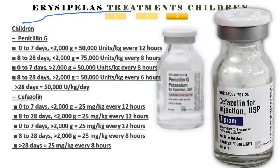Children. Penicillin G: 0 to 7 days, weight greater than 2,000 g: 50,000 units/kg every 8 hours. 8 to 28 days, greater than 2,000 g: 50,000 units/kg every 6 hours. Greater than 28 days: 50,000 units/kg per day. Cefazolin: 0 to 7 days, greater than 2,000 g: 25 mg/kg every 12 hours. 8 to 28 days, greater than 2,000 g: 25 mg/kg every 8 hours. Greater than 28 days: 25 mg/kg every 8 hours.